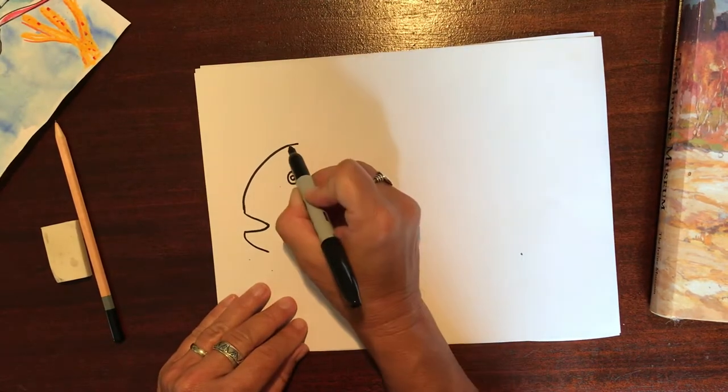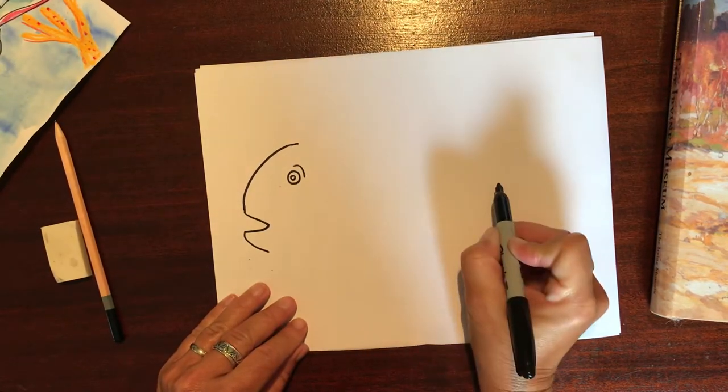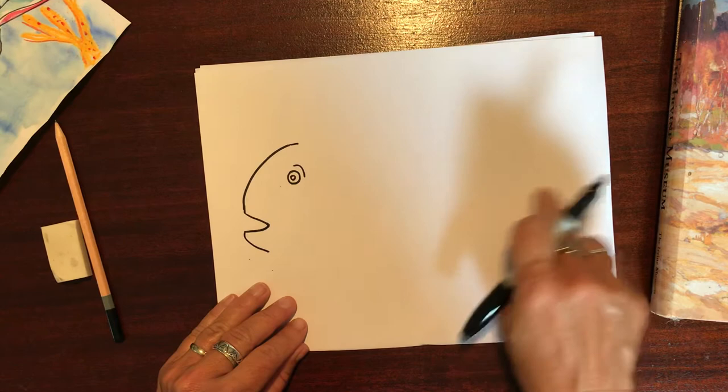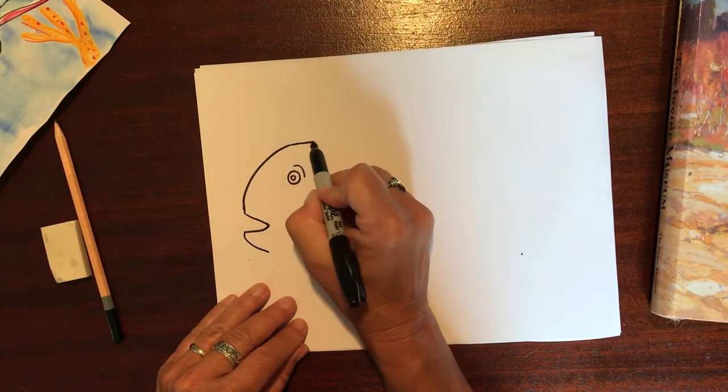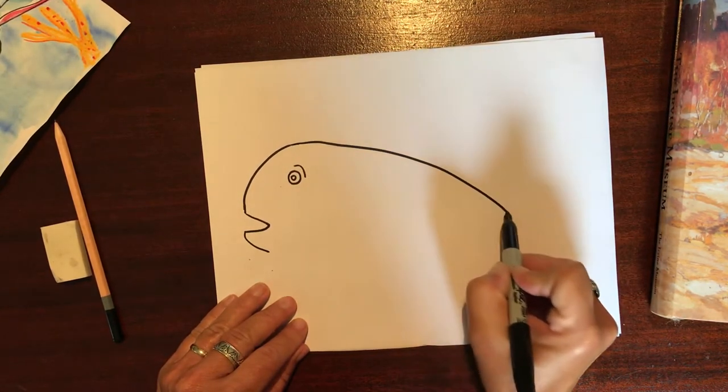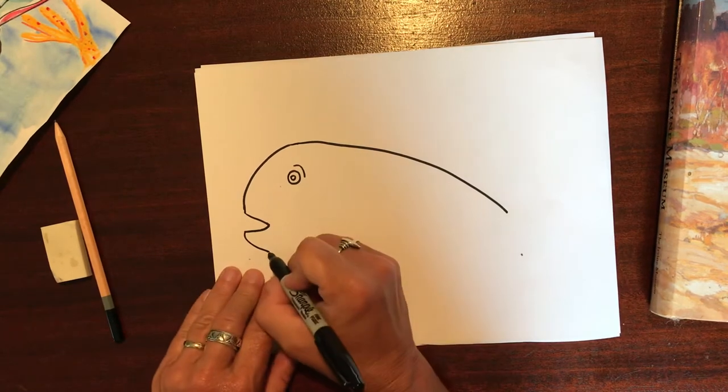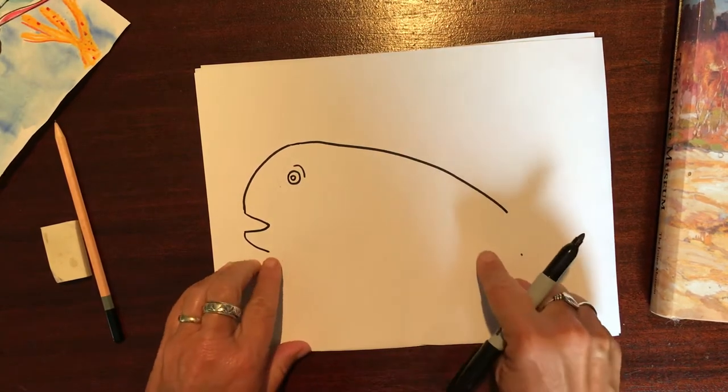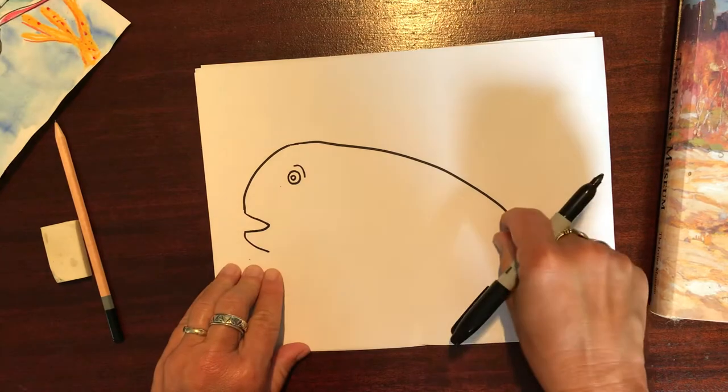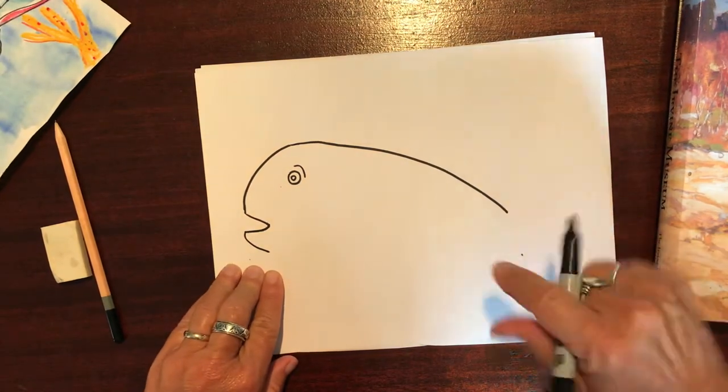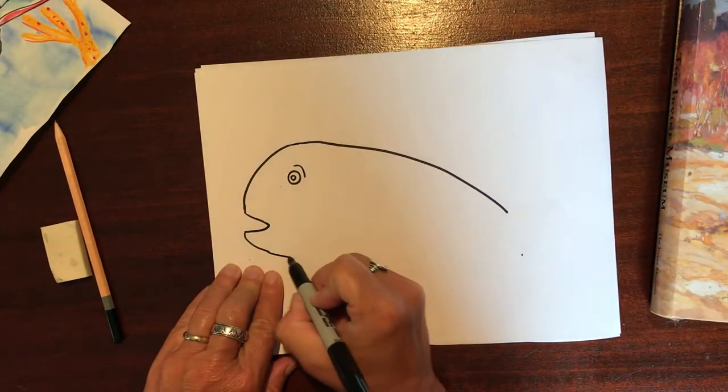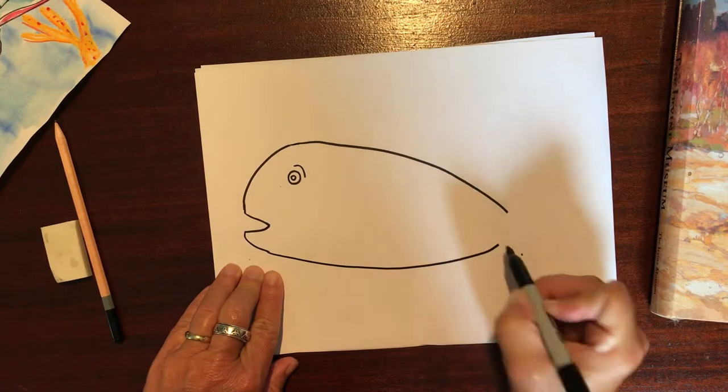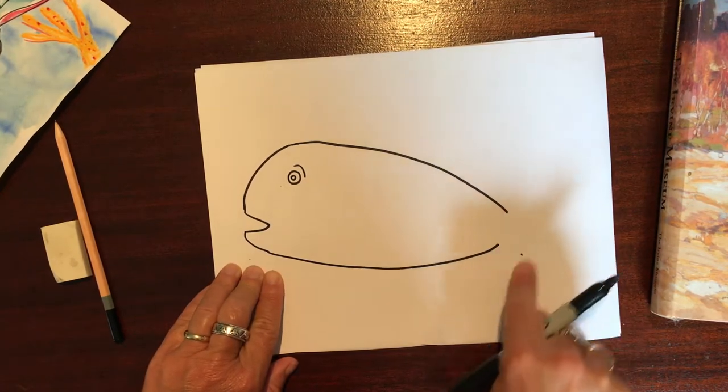Next I want to do a gradual curve down and save some room for my tail, so I'm going to curve my line down. And then over here I'm going to curve my line up, remembering to leave about two fingers width here so you can draw your tail. So this is where our tail is going to be.